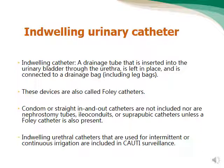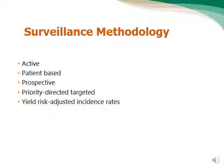A Foley catheter passes through the urethra and drains urine from the bladder to the outside through a collection bag. Whatever tubes you use to drain urine outside this passage are not called indwelling urinary catheters. Urethral catheters used for intermittent or continuous irrigation are included in CAUTI surveillance. The key point: indwelling urinary catheter.